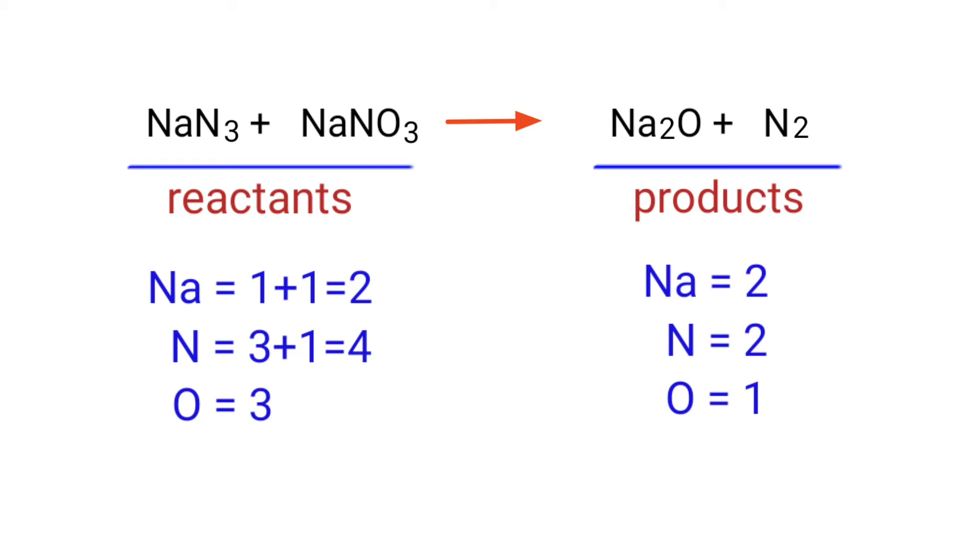If you look at this equation, the equation is not balanced. On the reactants side, there are 2 sodium atoms, 4 nitrogen atoms, and 3 oxygen atoms present. On the products side, there are 2 sodium atoms, 2 nitrogen atoms, and 1 oxygen atom present.